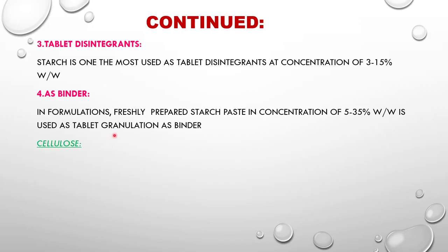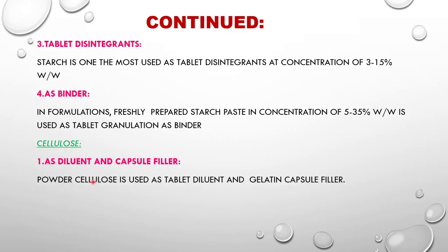Next is cellulose, which is also a carbohydrate. Cellulose is used as a diluent and capsule filler. Microcrystalline cellulose is used as a tablet diluent and gelatin capsule filler. As discussed, filler is an important part of making a capsule because we cannot give only an active ingredient in a medicine - we must fill it with an excipient to have a proper shape and proper way of administration.